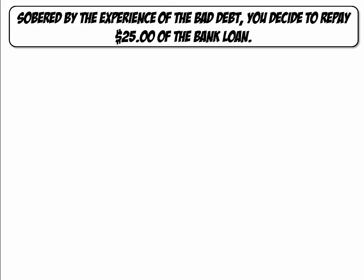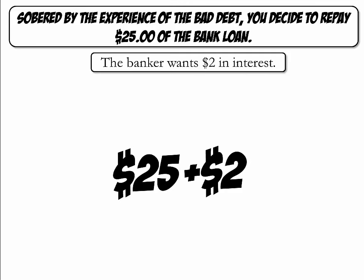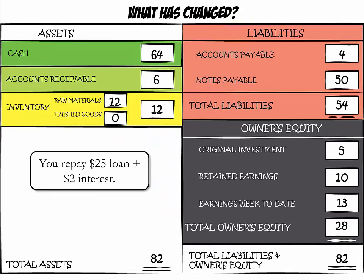Sobered by this bad debt experience, you decide you want to repay $25 of your bank loan. The banker wants you to pay $2 in interest. In order to repay the loan and the interest, you had to use $27 of your cash, so cash will be reduced from $64 to $37. Notes payable also needs to be updated to reflect that half of the loan principal was paid off, so we changed that from $50 to $25.